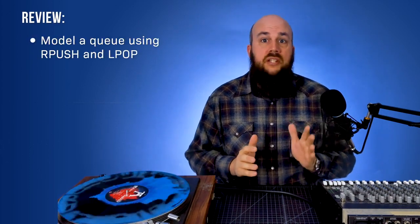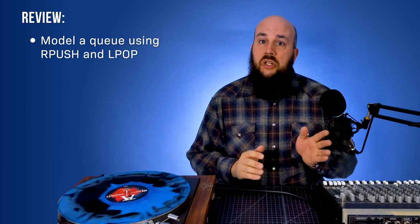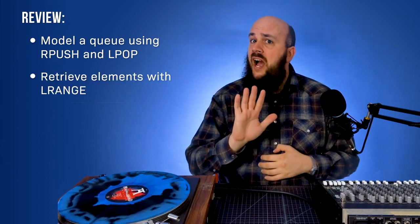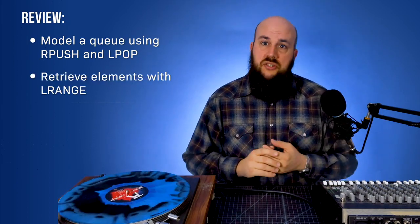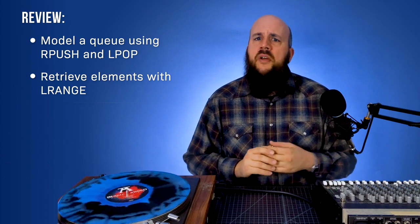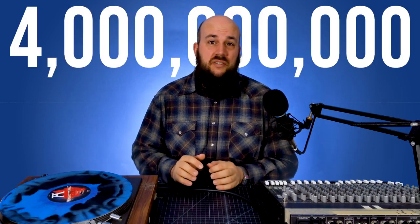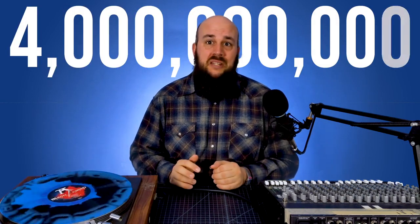Let's review what we've covered in this segment. We've learned how to model a queue using a list with its RPUSH and LPOP commands. We've learned how to get the first five elements from the list with LRANGE, and how to get the length of a list using LLEN. A single list can hold over 4 billion entries.